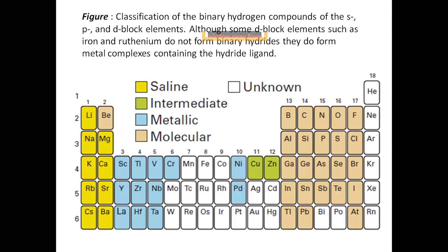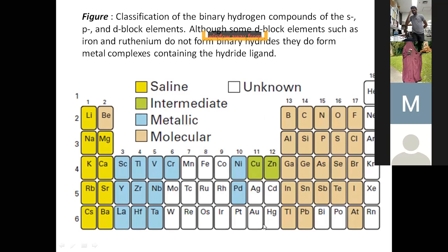This figure shows the classification of binary hydrogen compounds across S, P, D, and F block elements. Those that are saline in nature are shown in yellow; metallic hydrides are shown in blue; molecular hydrides forming covalent bonds are shown in gray; and off-white indicates those whose hydride nature is unknown or unclear. Hope you understand this — we will stop now.